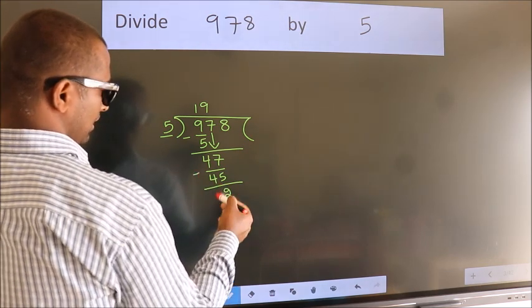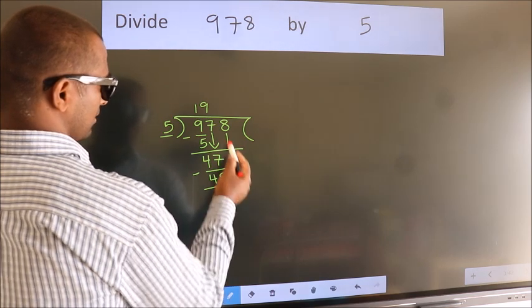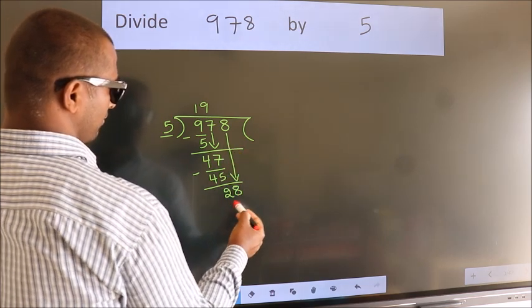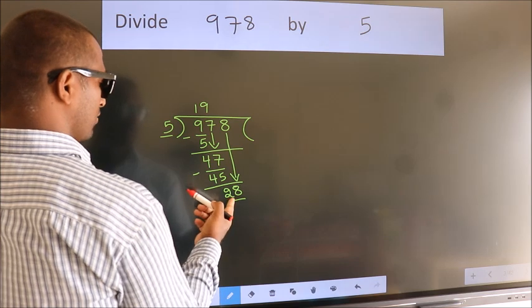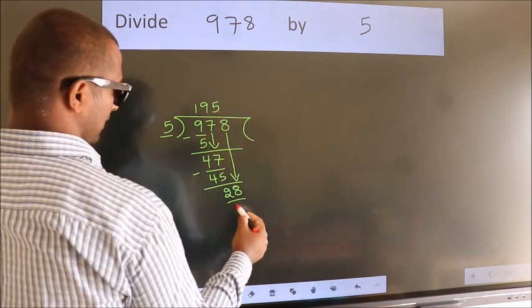We get 2. After this, bring down the beside number, so 8 comes down giving us 28. A number close to 28 in the 5 table is 5 fives 25.